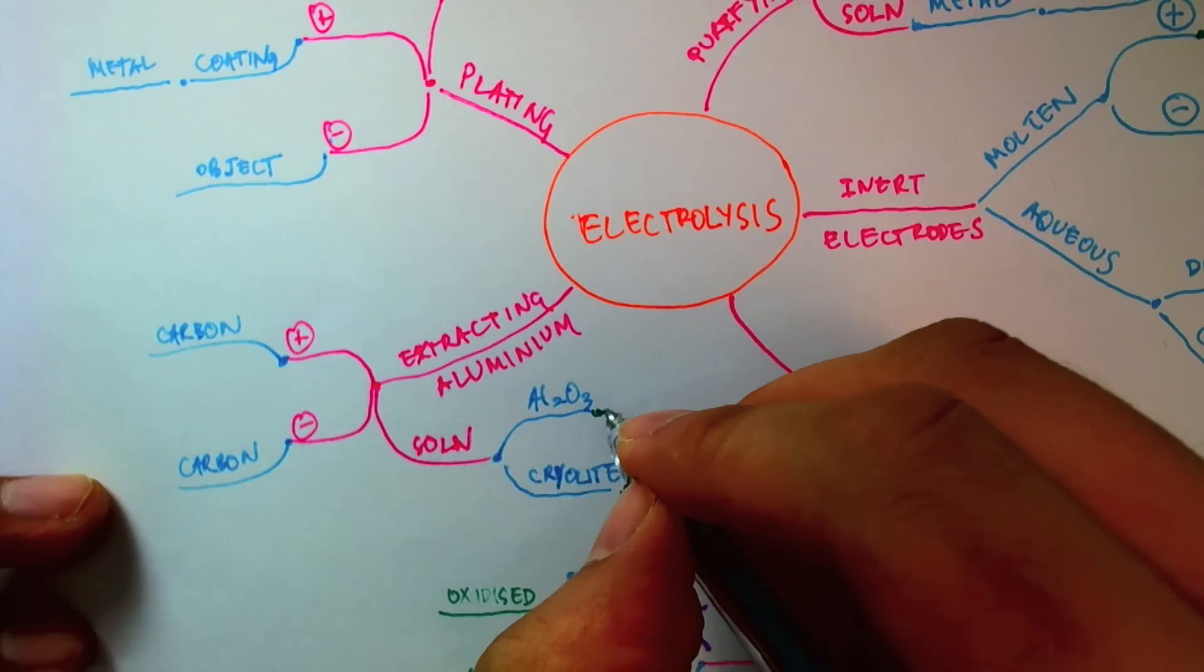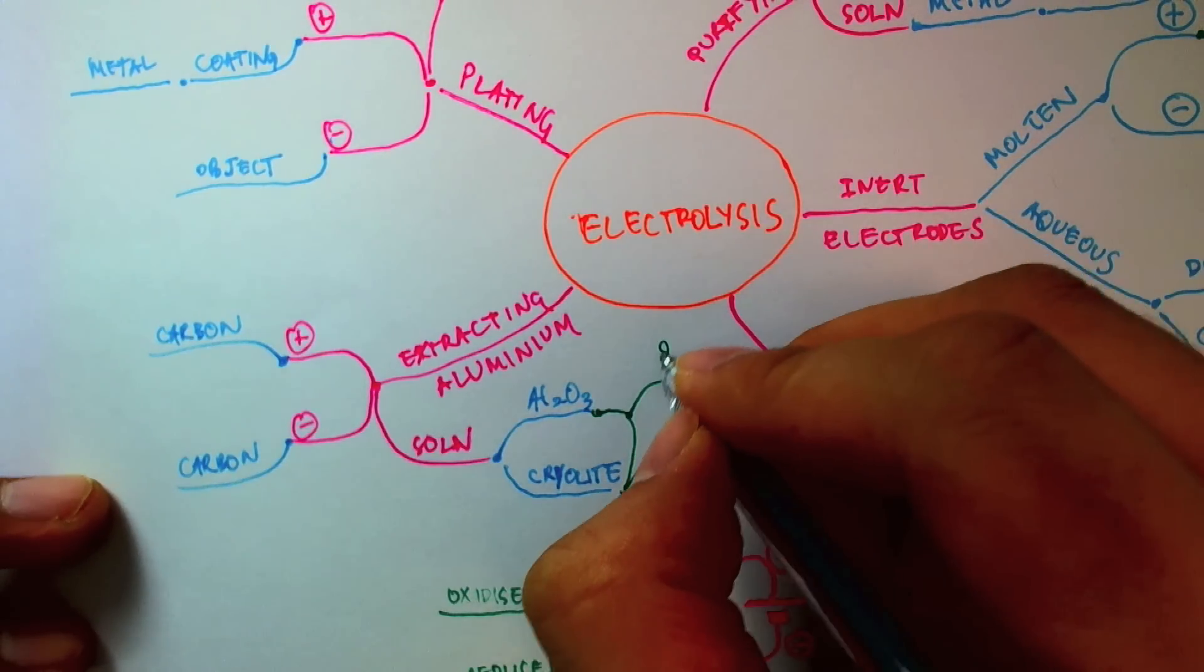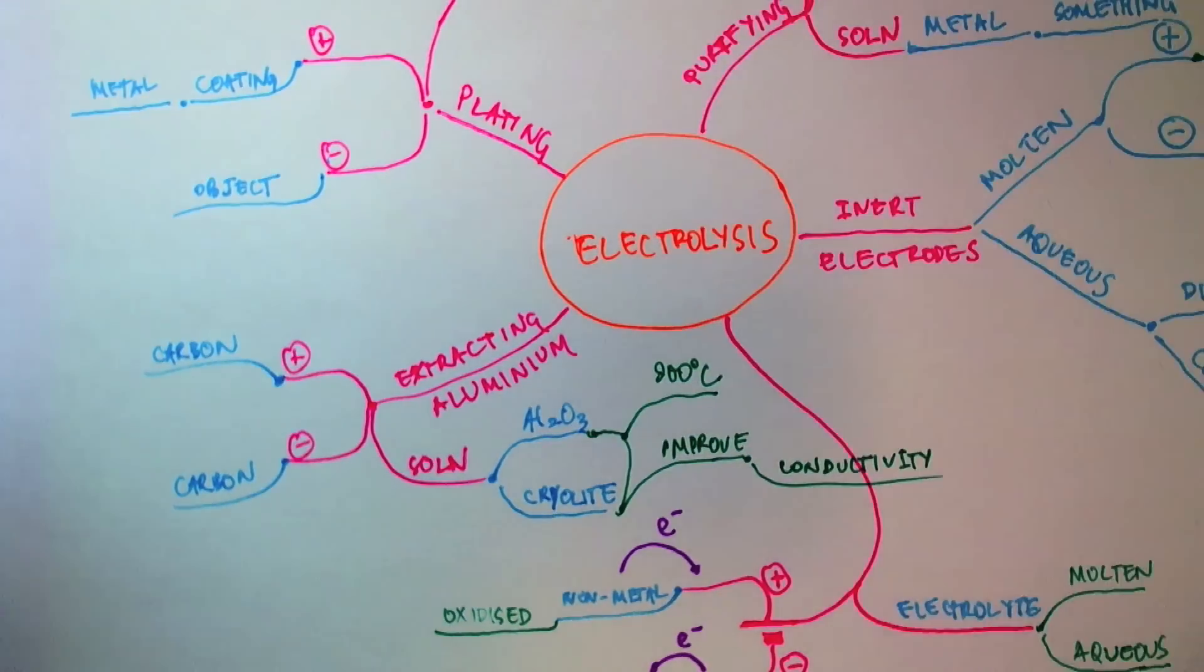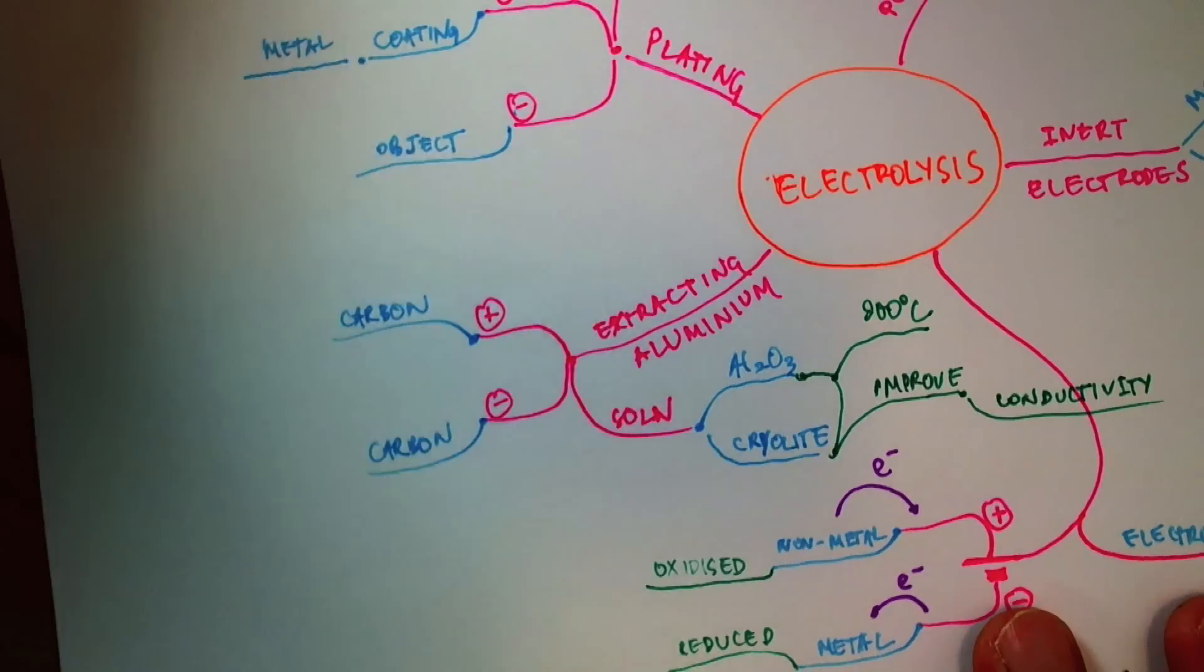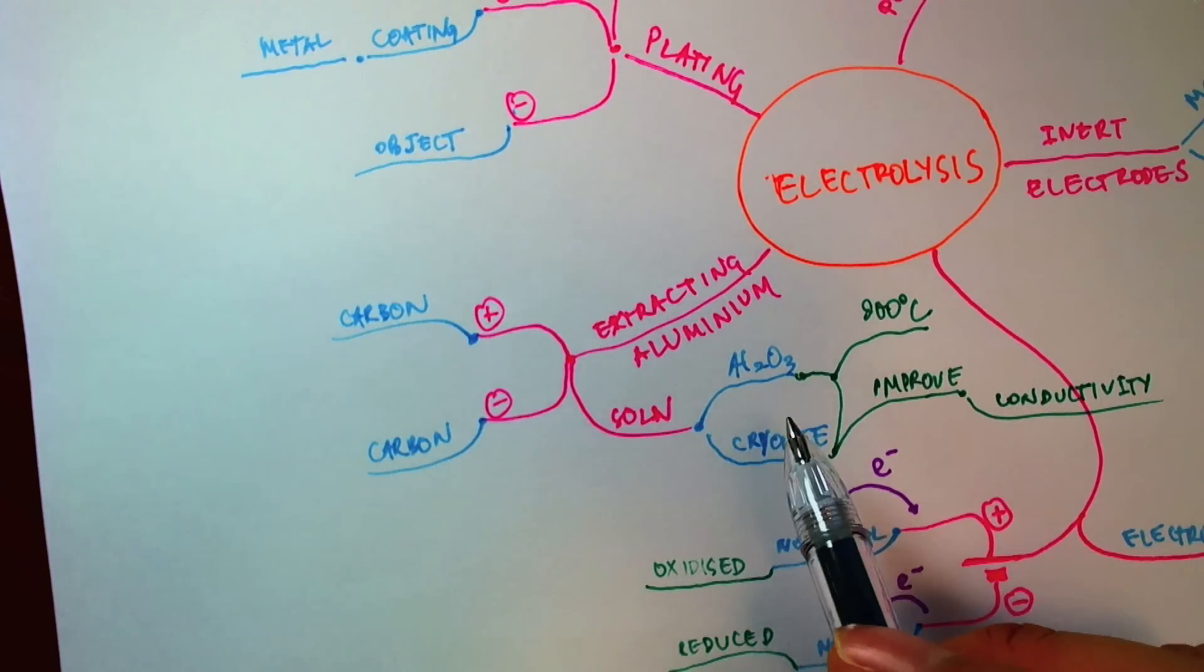And together, the cryolite, aluminum oxide, had a melting point of about 900 degrees Celsius. So that saved us some money on the energy to melt the aluminum oxide, because we needed it in the molten state for the ions to flow to conduct electricity.